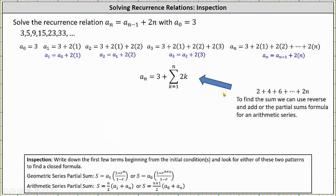In this case notice the first term in the arithmetic sequence is a sub 1. So using the arithmetic series partial sum formula where the first term is a sub 1, a sub n is equal to 3 plus n divided by 2 times the quantity 2 plus 2n where 2 is a sub 1 and a sub n is 2n. Simplifying we have a sub n equals 3 plus n times the quantity n plus 1. We can also multiply this out and express a sub n as n squared plus n plus 3.